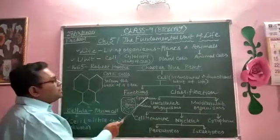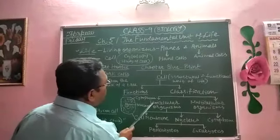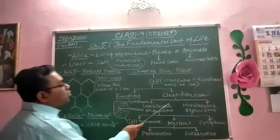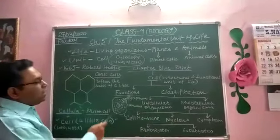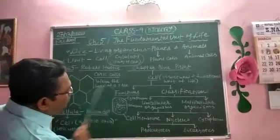Obviously, unicellular organisms are having a single cell, multicellular organisms are having more than one cell. It may be a plant cell or it may be an animal cell.